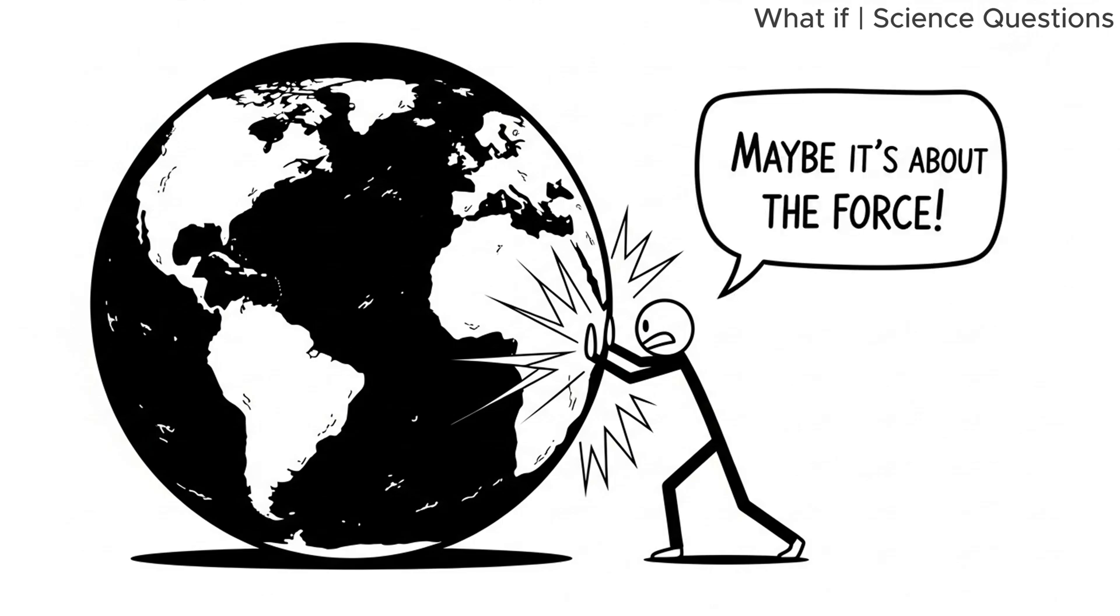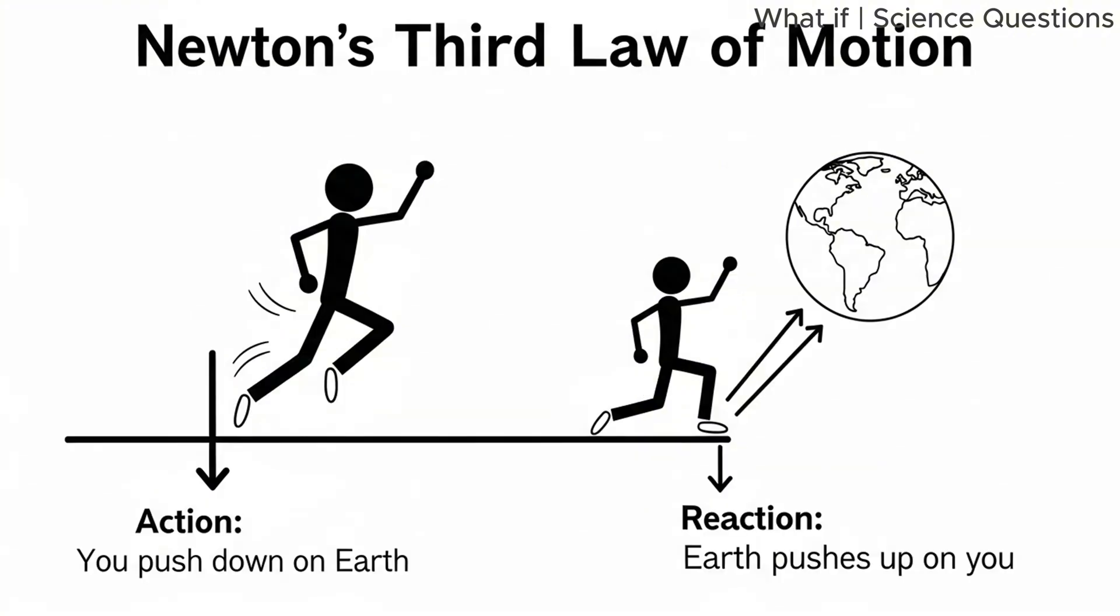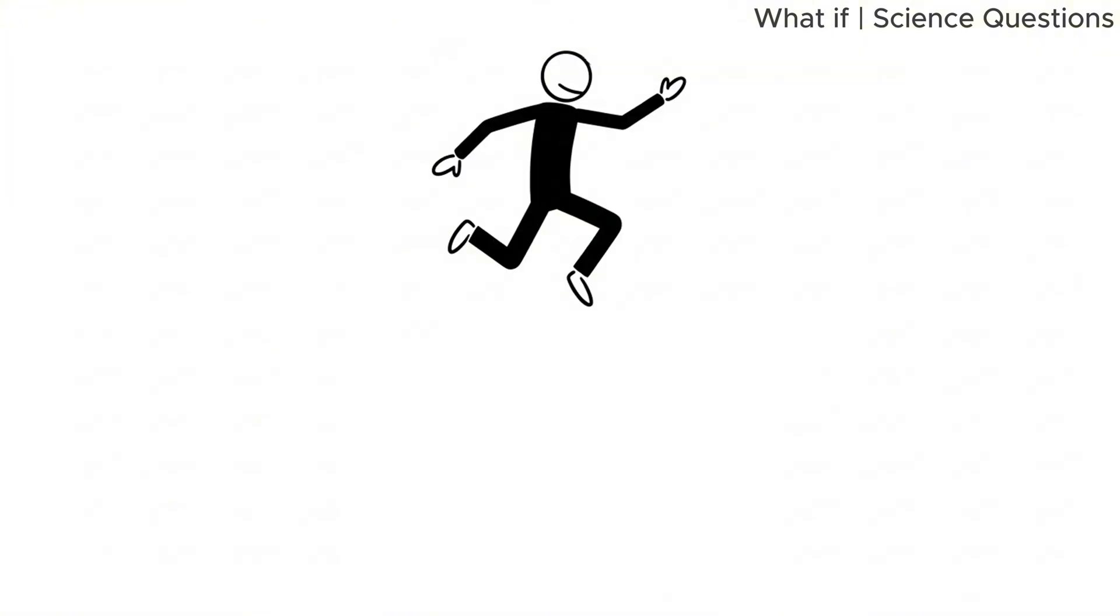But let's not give up yet. Maybe it's not about the mass. Maybe it's about the force. When you jump, you push down on the ground. Newton's third law says every action has an equal and opposite reaction. So when you push down, Earth pushes you up. That push is what propels you into the air. But, since you're pushing against Earth, doesn't the Earth move slightly in the opposite direction?